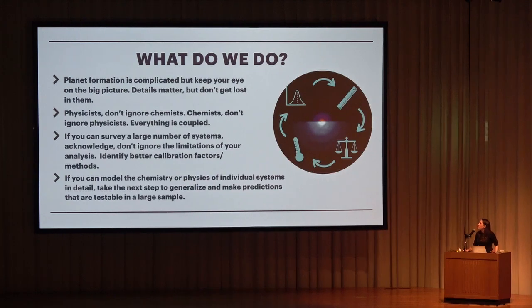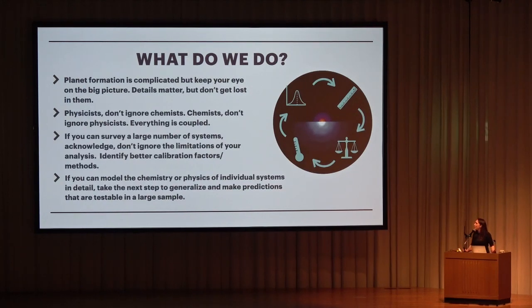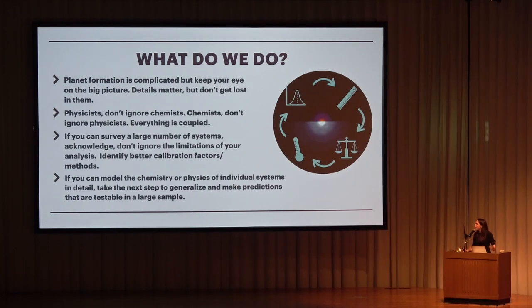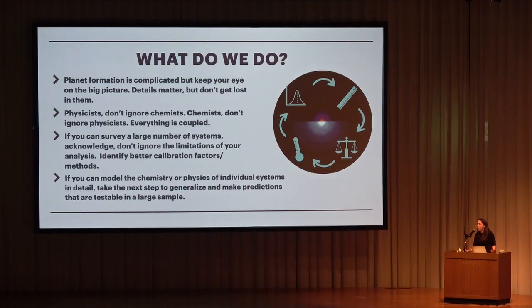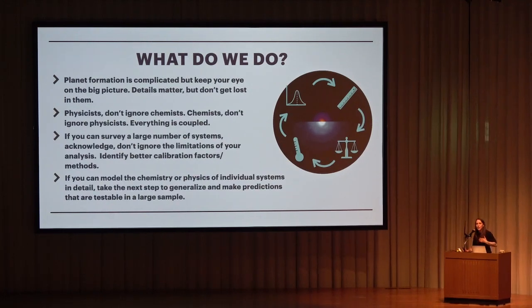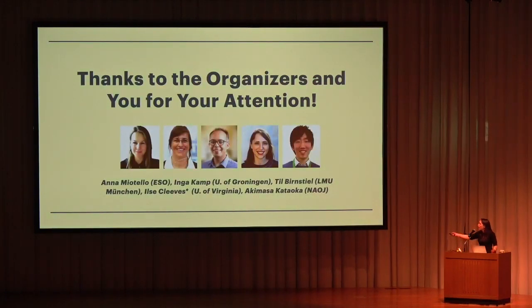What do we do? Keep your eye on the big picture — the details matter, but don't get totally lost in them. Physicists shouldn't ignore chemists and vice versa — everything is inherently coupled and we can't all work in silos. If you can survey large numbers of systems, acknowledge and don't ignore the limitations of your analysis. Identify better calibration factors — that involves method development. And if you can model chemistry and physics of individual systems in incredible detail, take the next step: generalize those results and make testable predictions in large samples, to get towards a fundamental picture of planet formation and put our solar system into context.